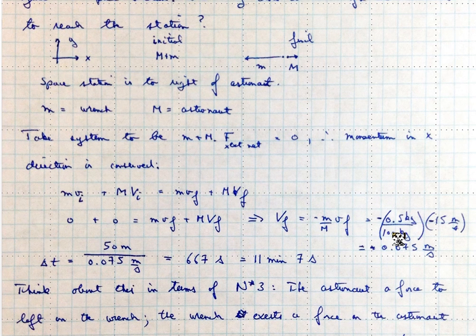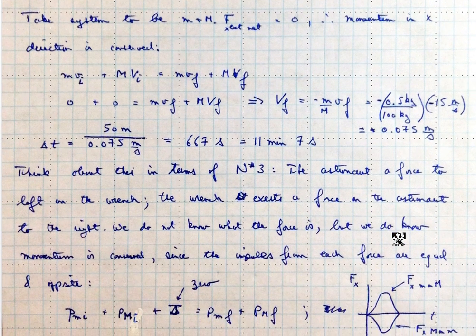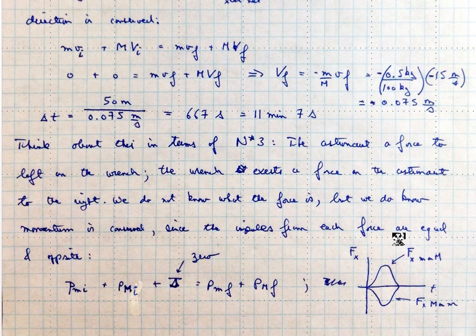And if you think now about it, about this in terms of Newton number 3, just to repeat what I said before, the astronaut exerts a force to the left on the wrench, but that by Newton number 3 means that the wrench exerts a force on the astronaut to the right. And we do not know what that force is, but we do know that momentum is conserved, and the impulses from each force are equal and opposite.